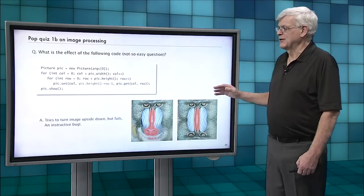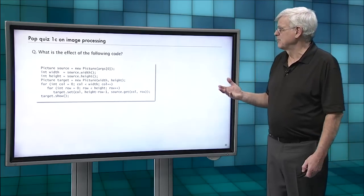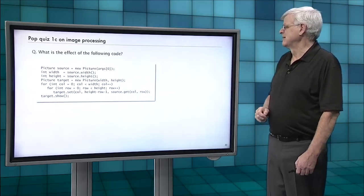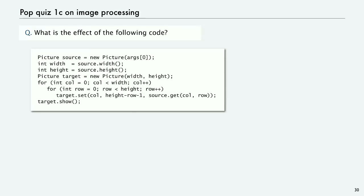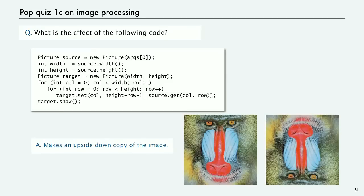What we need to do if we want to do this upside down thing is create a totally new picture. And so that's the answer to this question. We're going to take our source picture, which is the one that we get from the file name in the command line. We're going to get the width and the height of that picture. And then we're going to create another picture, the target picture. And we'll create a blank picture of the same width and height. And then we go through for every pixel and we set the pixel in the target picture - there we can do the rows upside down to the color that we get from the source picture and then show it. So that one actually does make an upside down copy of the image.